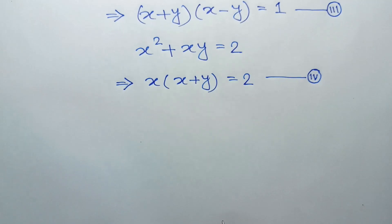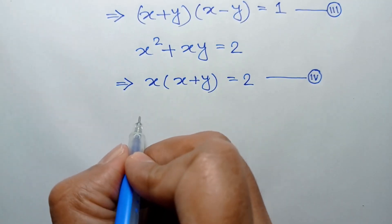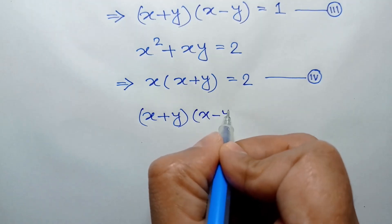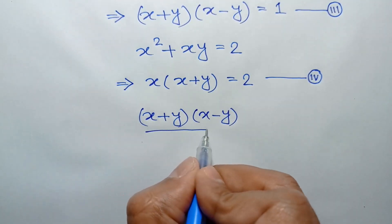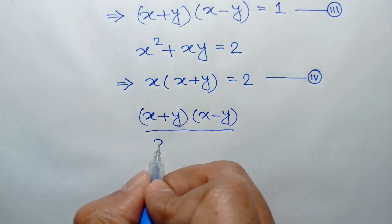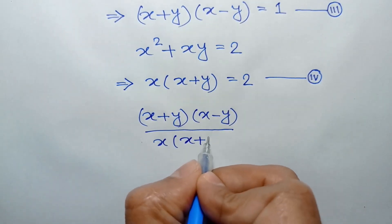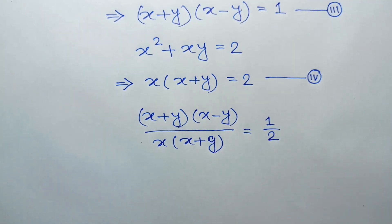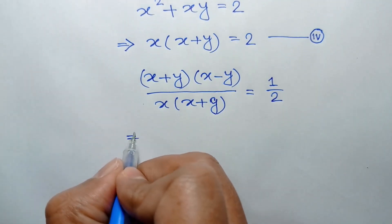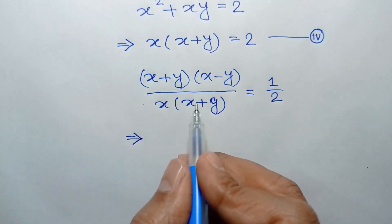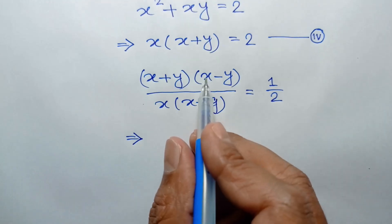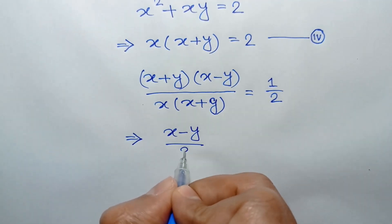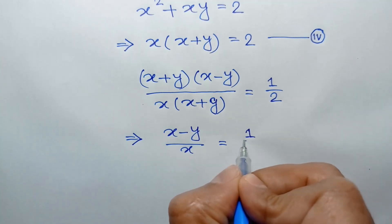Now, if we divide equation 3 by equation 4, we will have x plus y times x minus y over x times x plus y is equal to 1 over 2. The x plus y terms cancel out, so it remains x minus y over x is equal to 1 over 2.